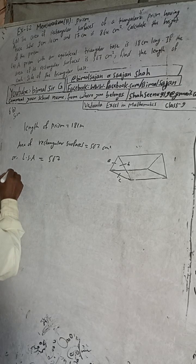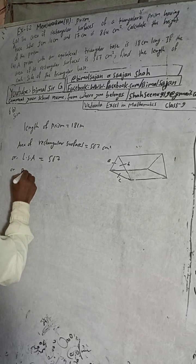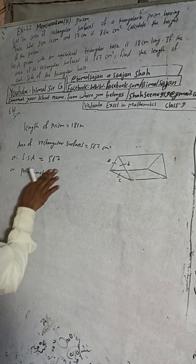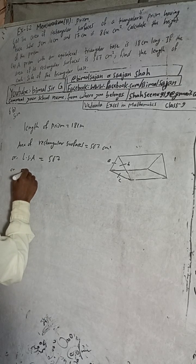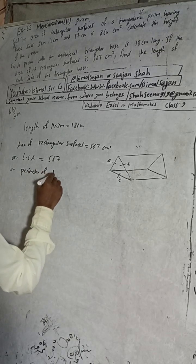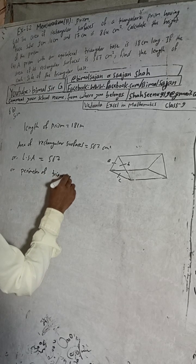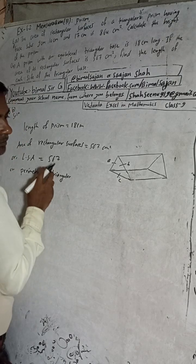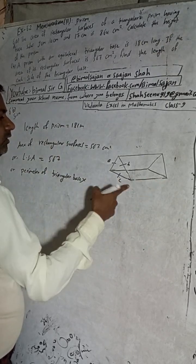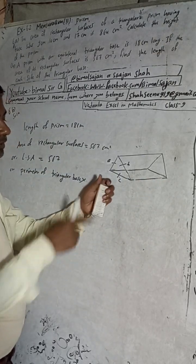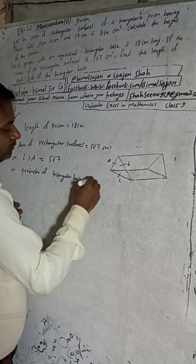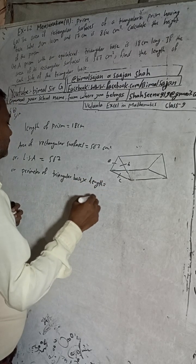The lateral surface area is equal to the perimeter of the triangular base multiplied by the length or height. If the prism is standing upright, this is height; if it is lying down, this is length — no problem. So: lateral surface area = perimeter of triangular base × length.